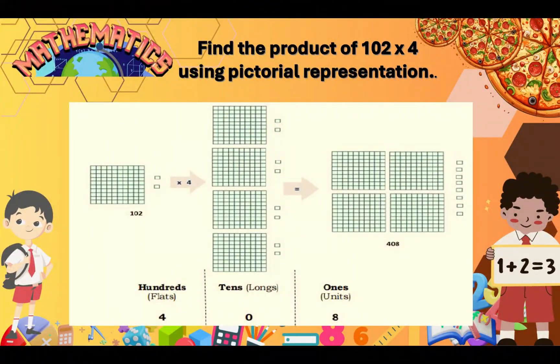Now, let's find the product of 102 times 4 using pictorial representation. So, there are lots of ways to find a product. First, we use pictorial representation. 102 times 4. So, using blocks, we illustrated 4 hundreds. Then, 2 squares.